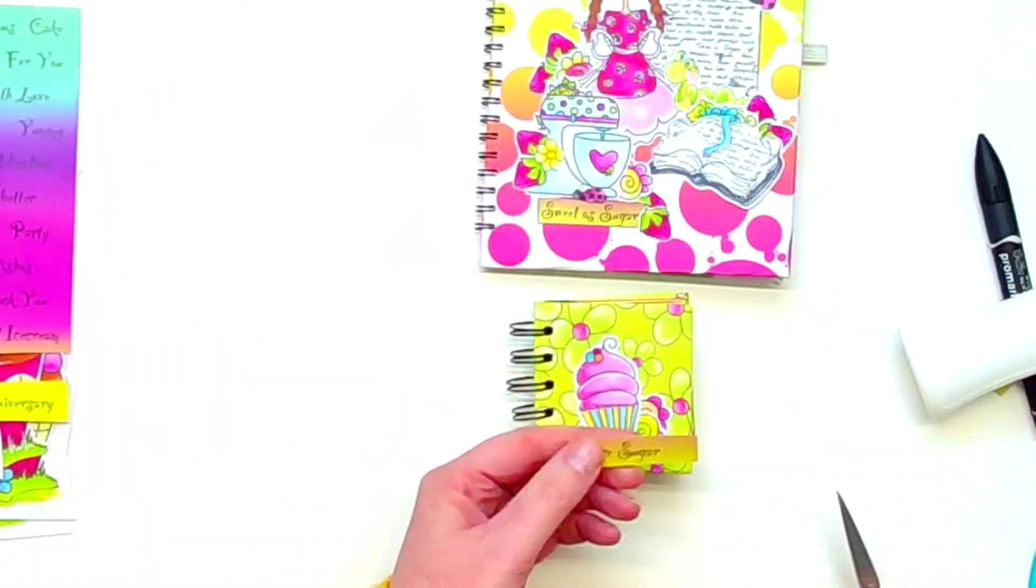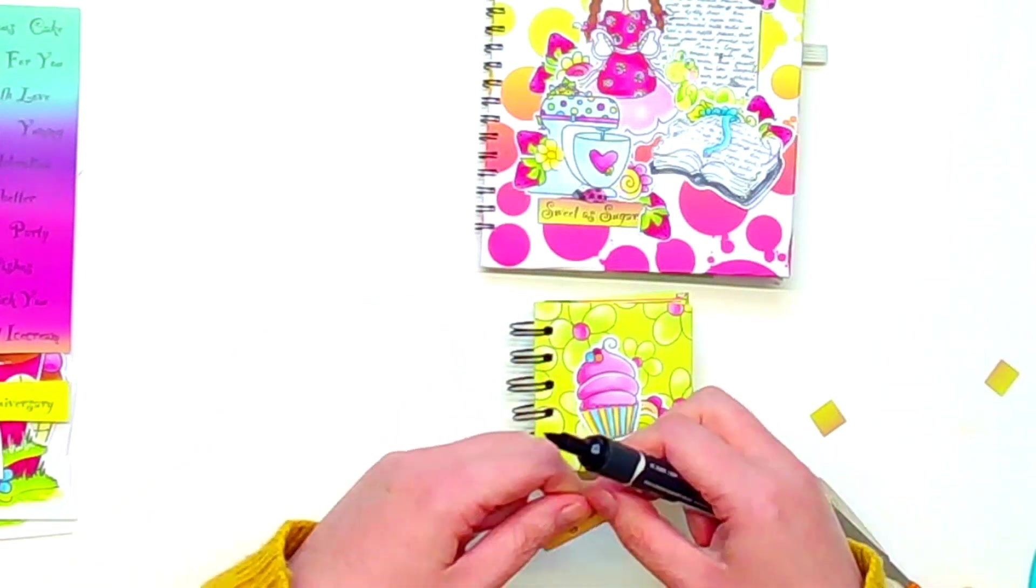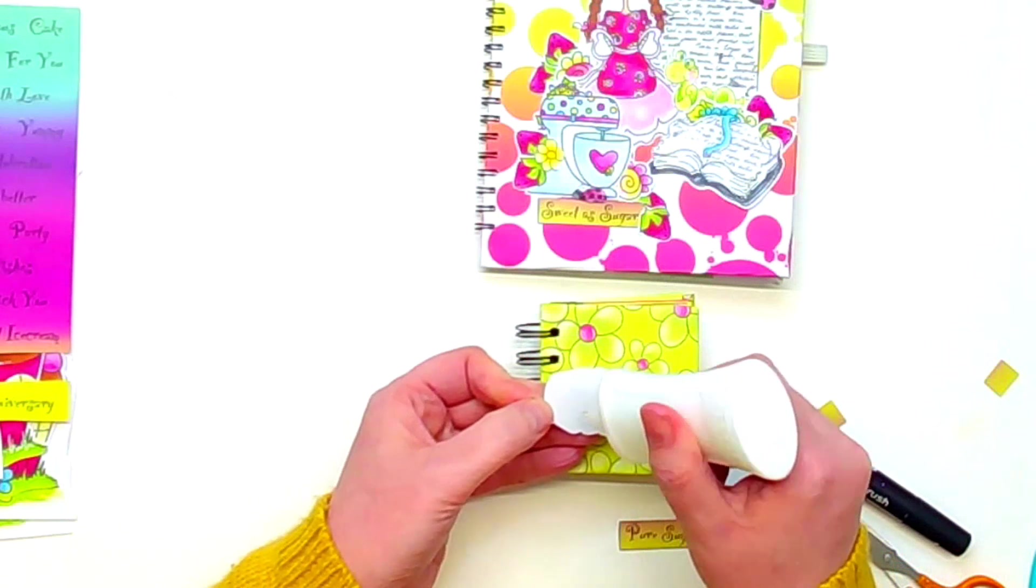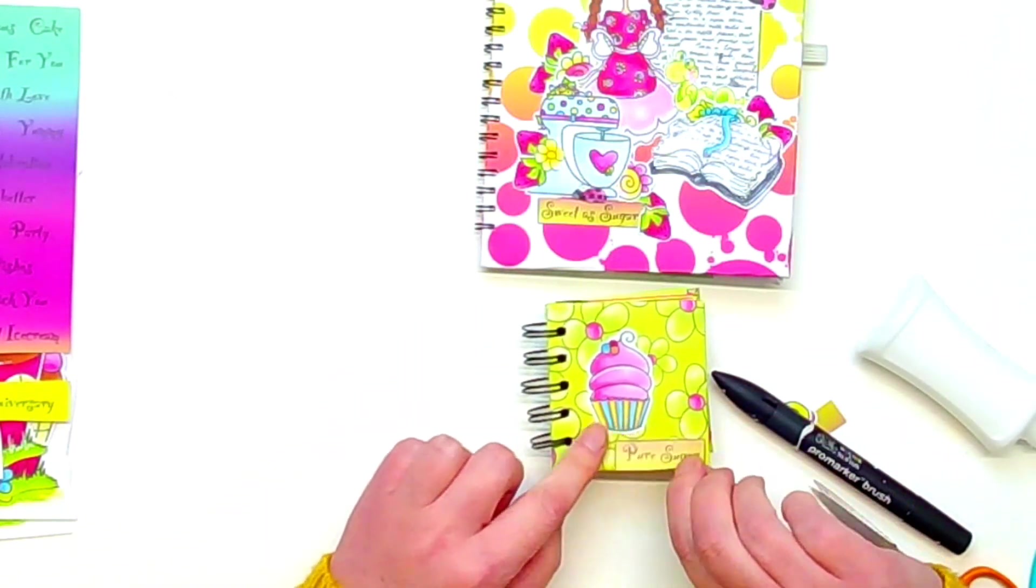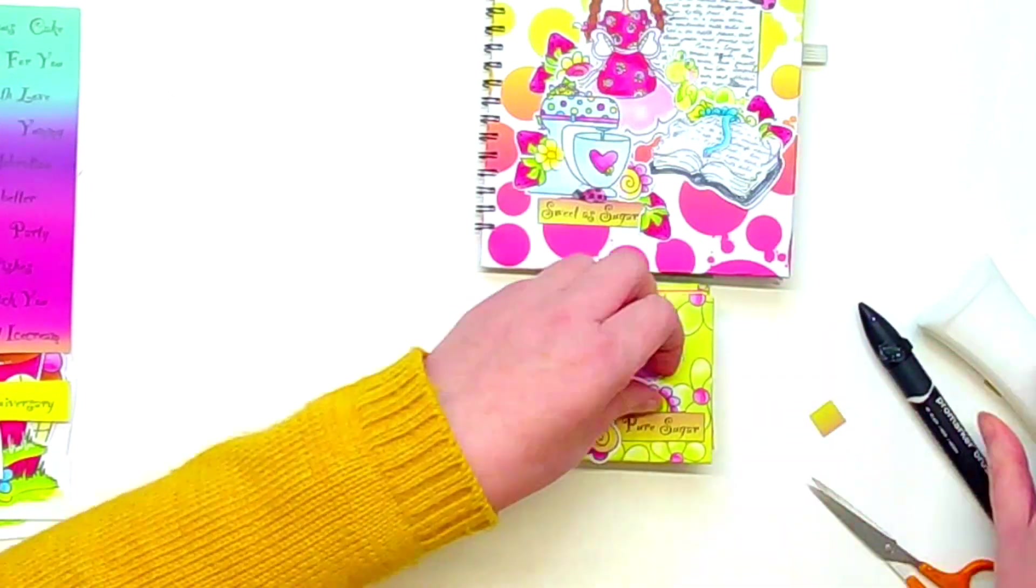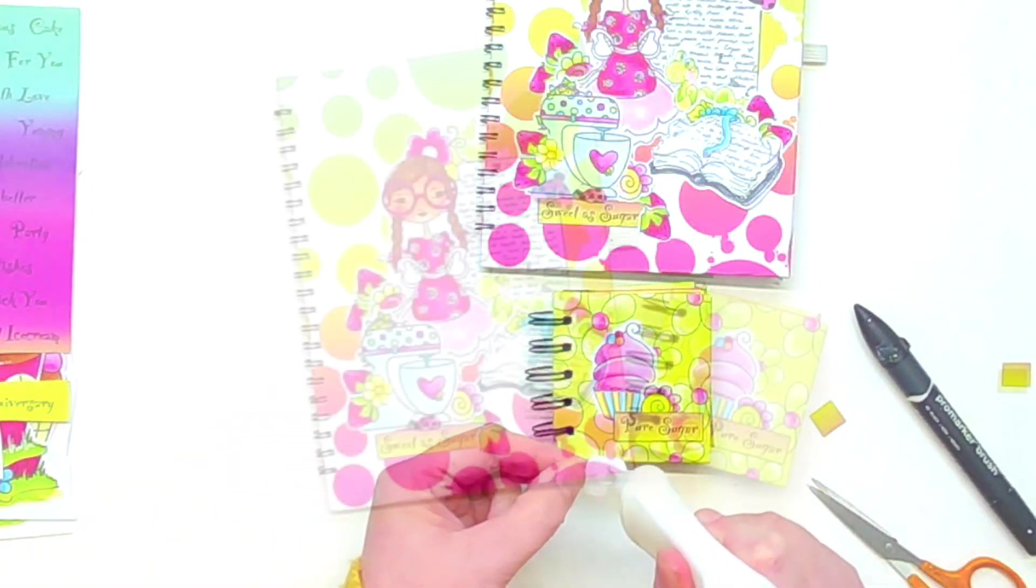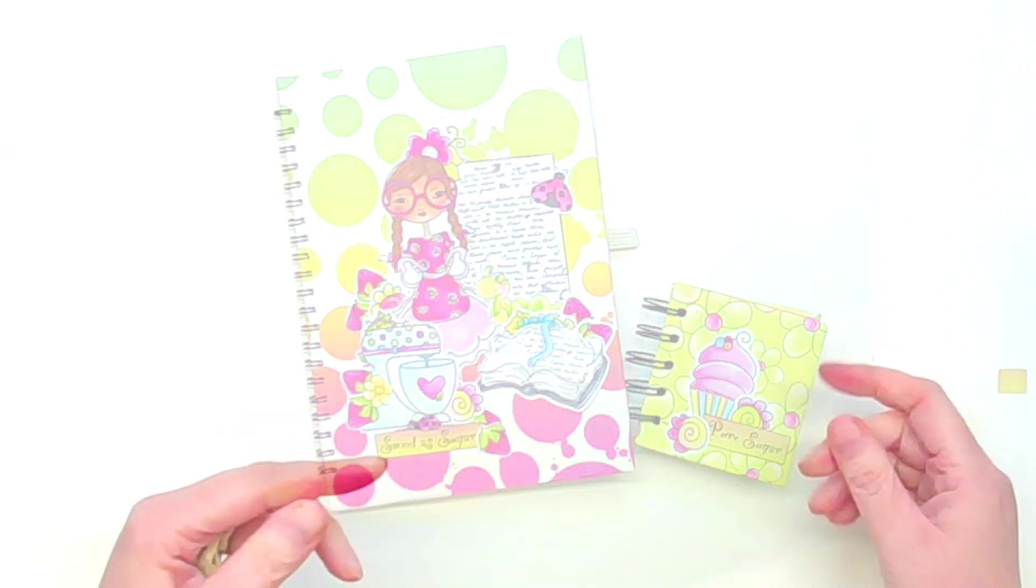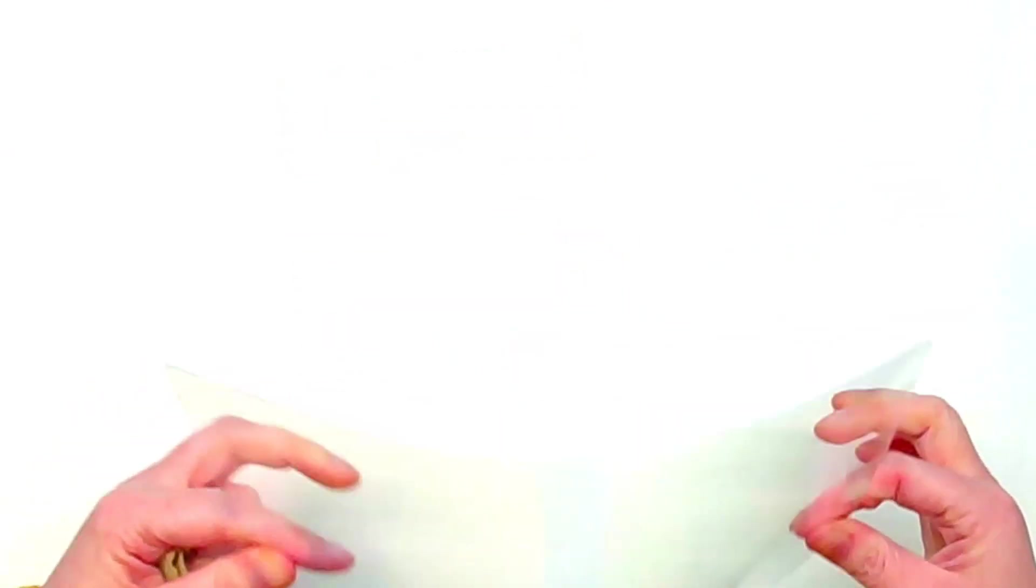Then I stuck that down and then I'm doing the same with the front here. So as we've said, this is part of a YouTube hop and there are a few of us today that are creating for you. So please do check everybody out - you will see all the details in the description box below. I have seen what the lovely Dawn has made and it is gorgeous. As of yet I don't know what Louise has made, so I'm looking forward to seeing that, so do check it out as well.